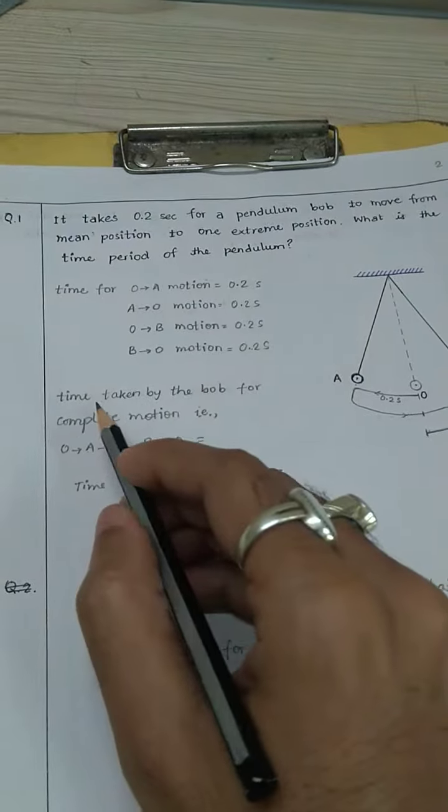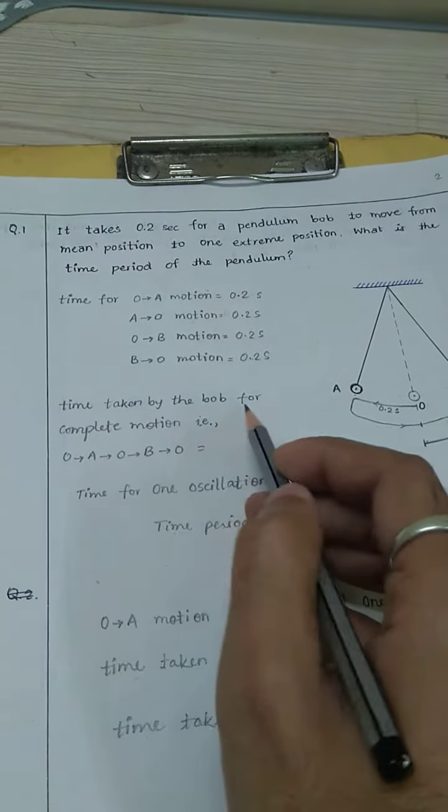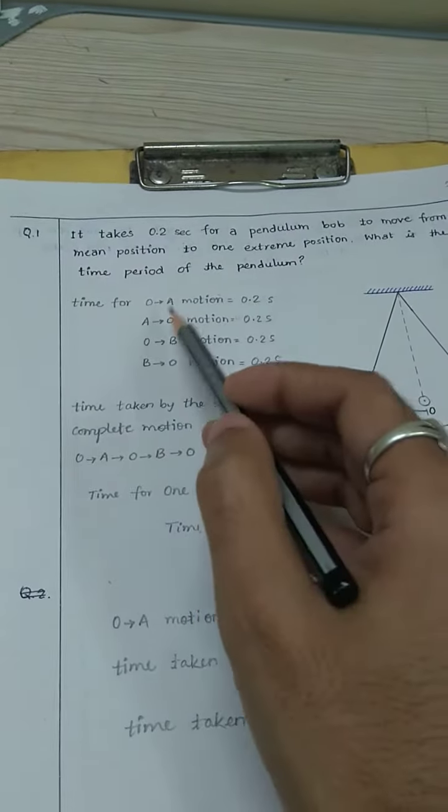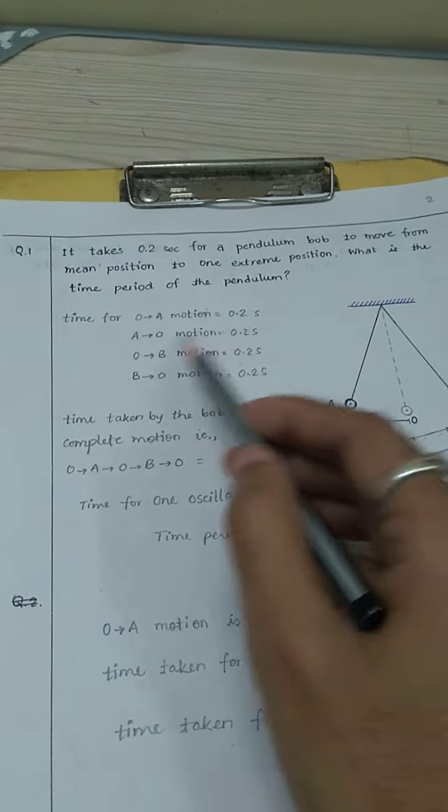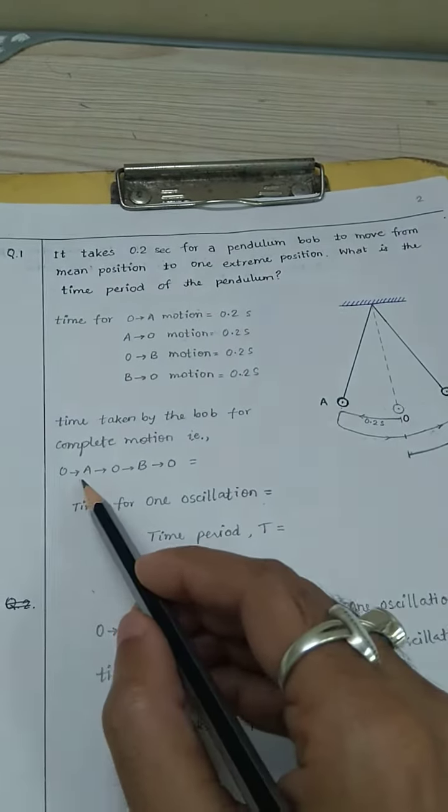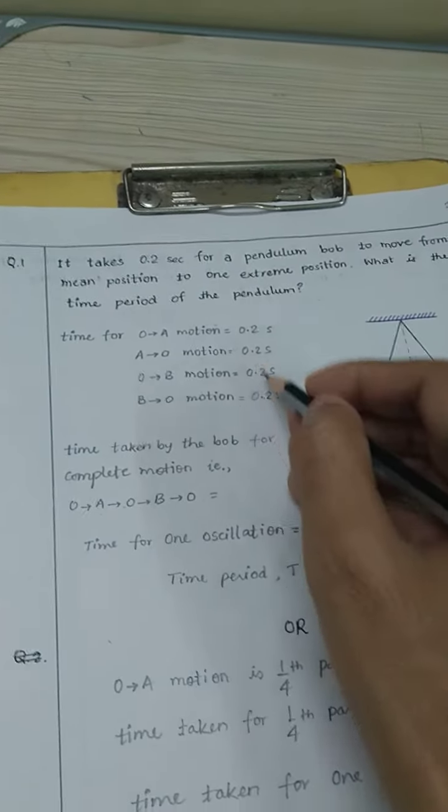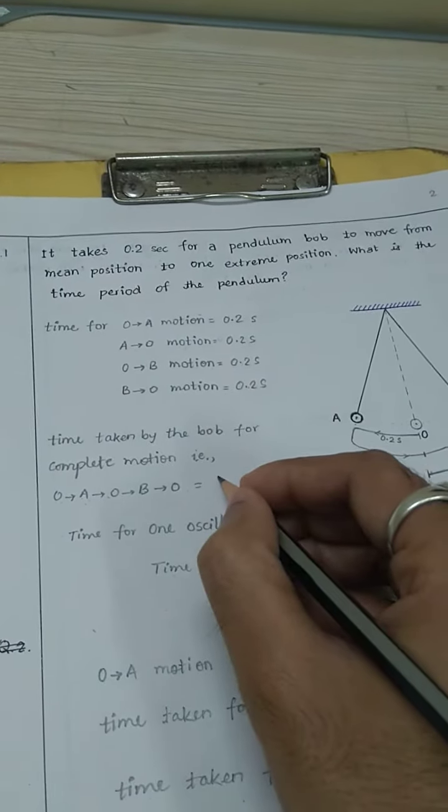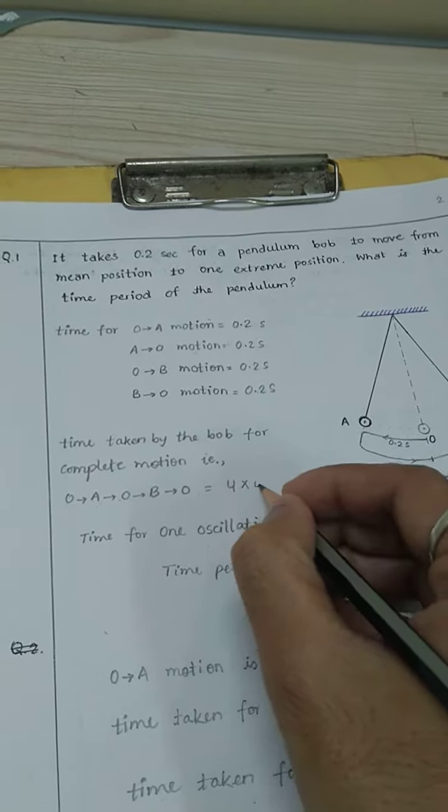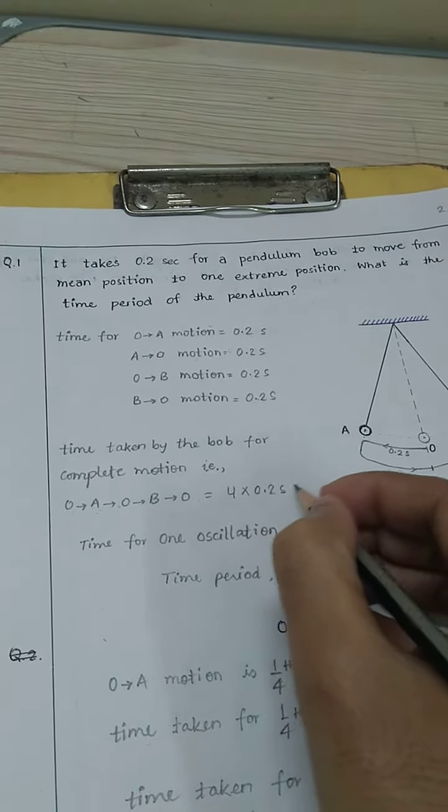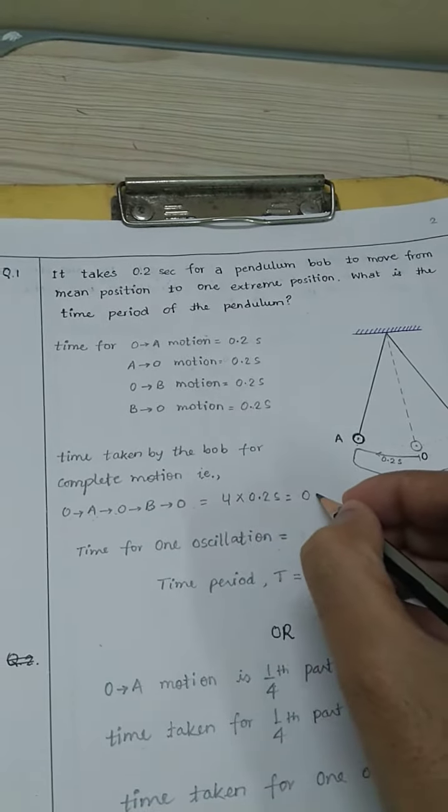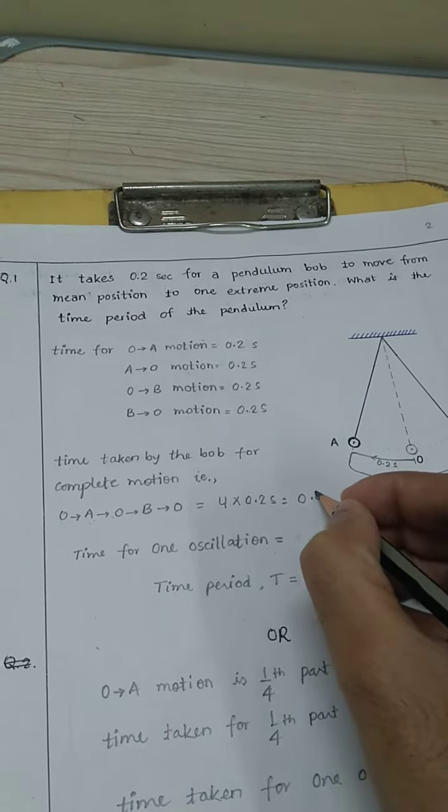Now what is the time taken by the bob for complete motion from O to A, A to O, O to B, and B to O? It is four times 0.2, so 4 multiplied by 0.2 seconds, and it will give 0.8 seconds.